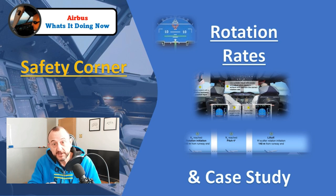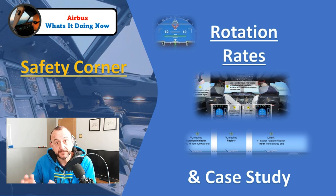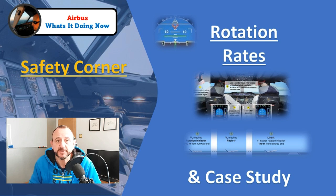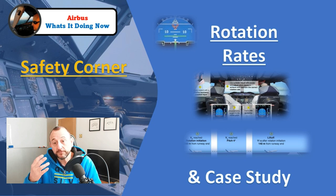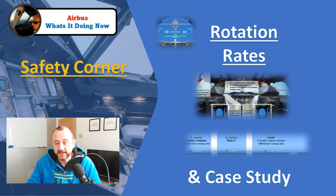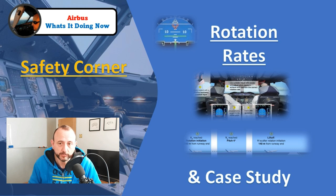We'll take a look at the rotation assistance and the difference between the CEO and the NEO and how that works. Then we'll look at the tail strike pitch limit indication for the 320 aircraft as well. And then we'll finish off with a revision and a reminder of the correct technique and why that's important.